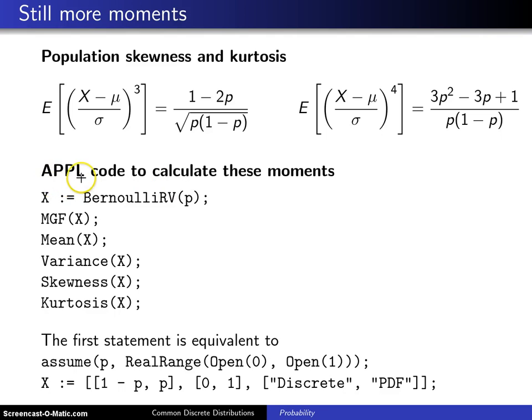If you want to use APPL to calculate those moments, you set X equal to a Bernoulli random variable with parameter p. Now to look a little bit behind the curtains in terms of what's happening, that first statement, namely X is a Bernoulli random variable with parameter p, is executing the following Maple code.